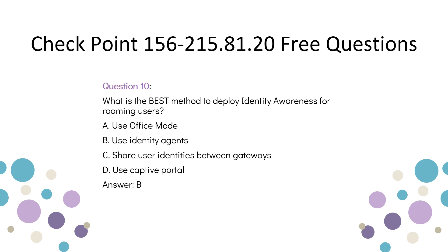Question 10: What is the best method to deploy Identity Awareness for roaming users? A. Use office mode. B. Use identity agents. C. Share user identities between gateways. D. Use captive portal. Answer: B.